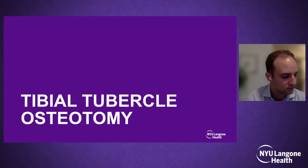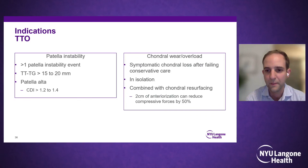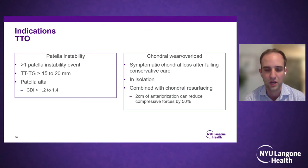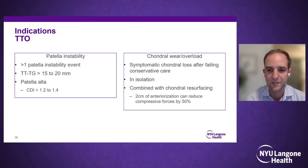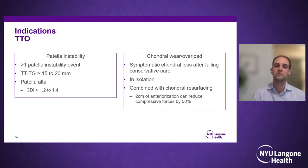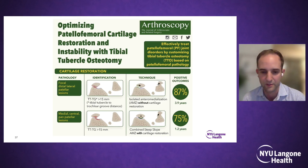Moving on to tibiotubercal osteotomy. Indications include patella instability with an elevated tibiotubercal-trochlear groove (TTTG) distance, and patella alta can be corrected with a distalizing osteotomy. Additionally, tibiotubercal osteotomy can be performed for symptomatic chondral loss in the patellofemoral joint in isolation or combined with resurfacing. It's been shown that 2 centimeters of anteriorization can reduce compressive forces by 50%.